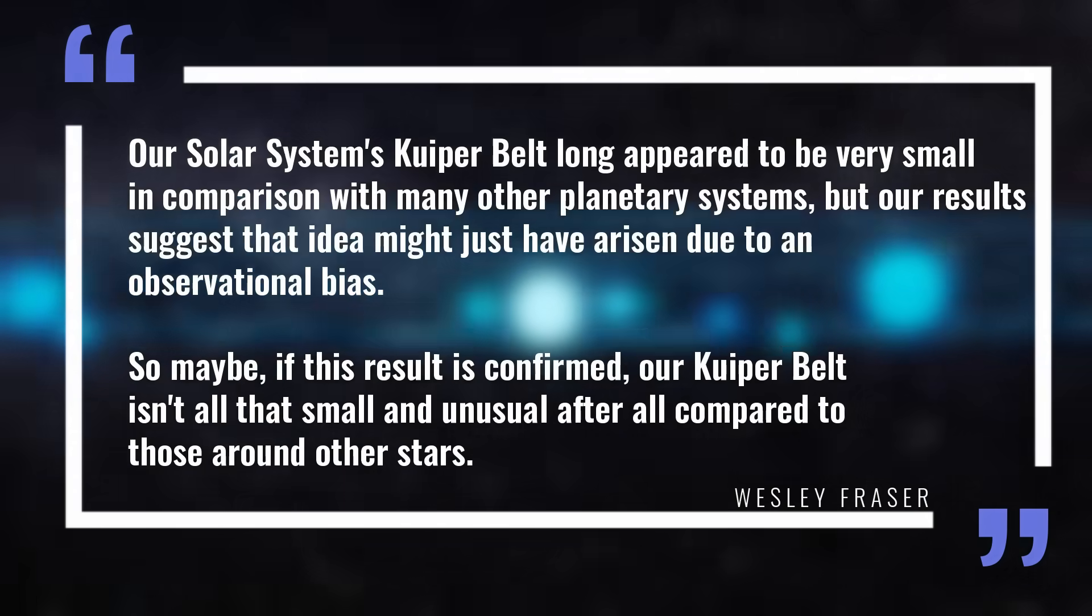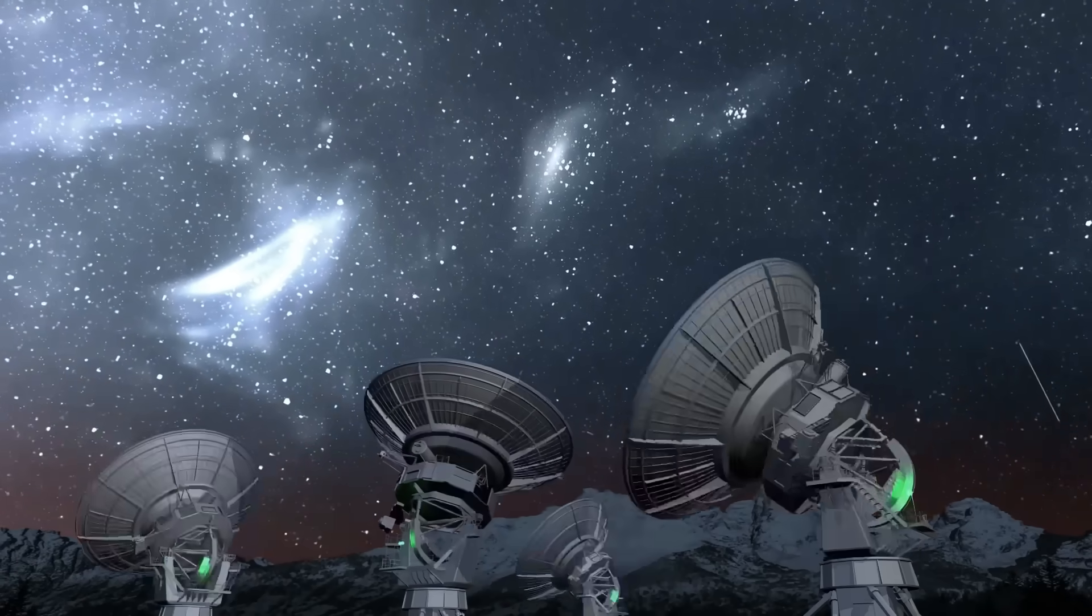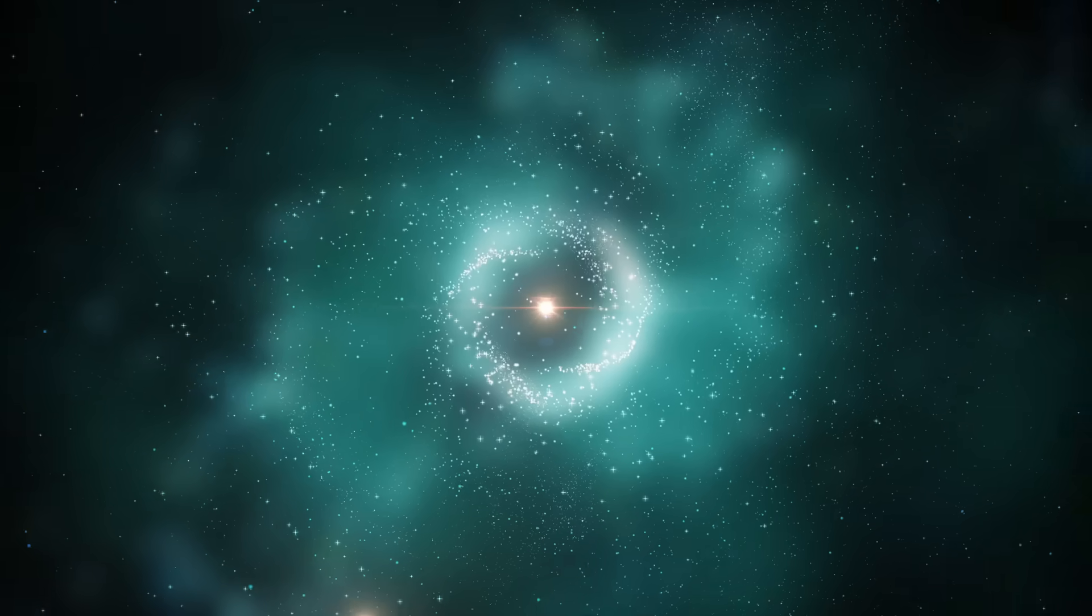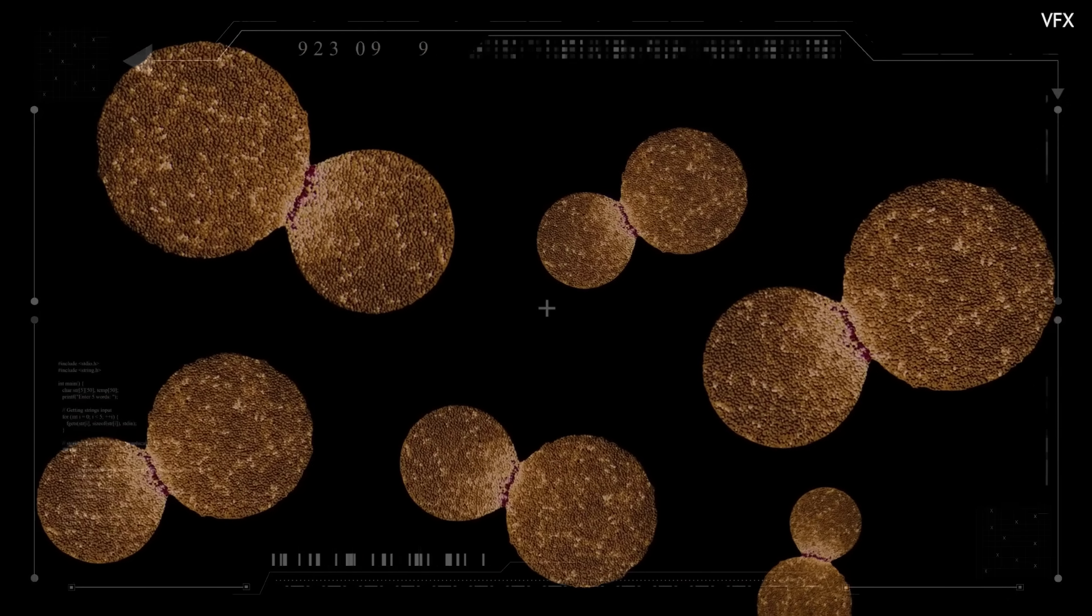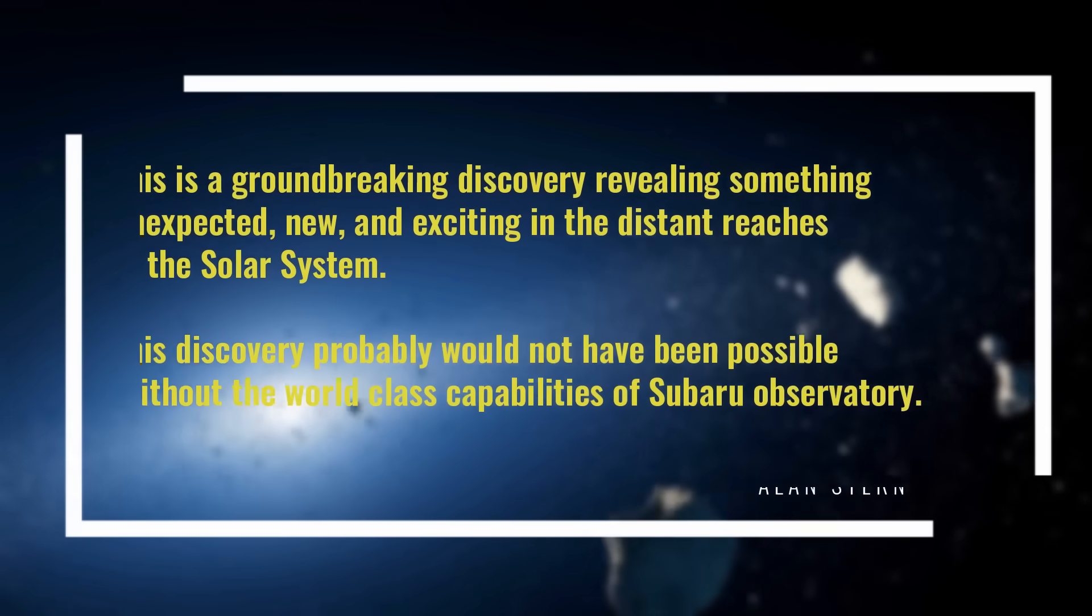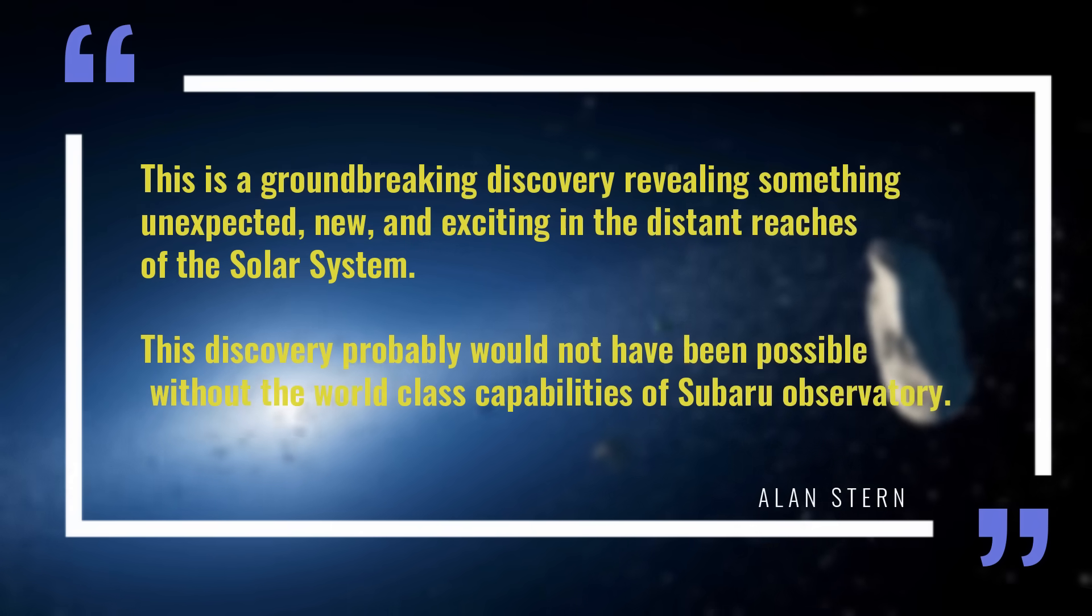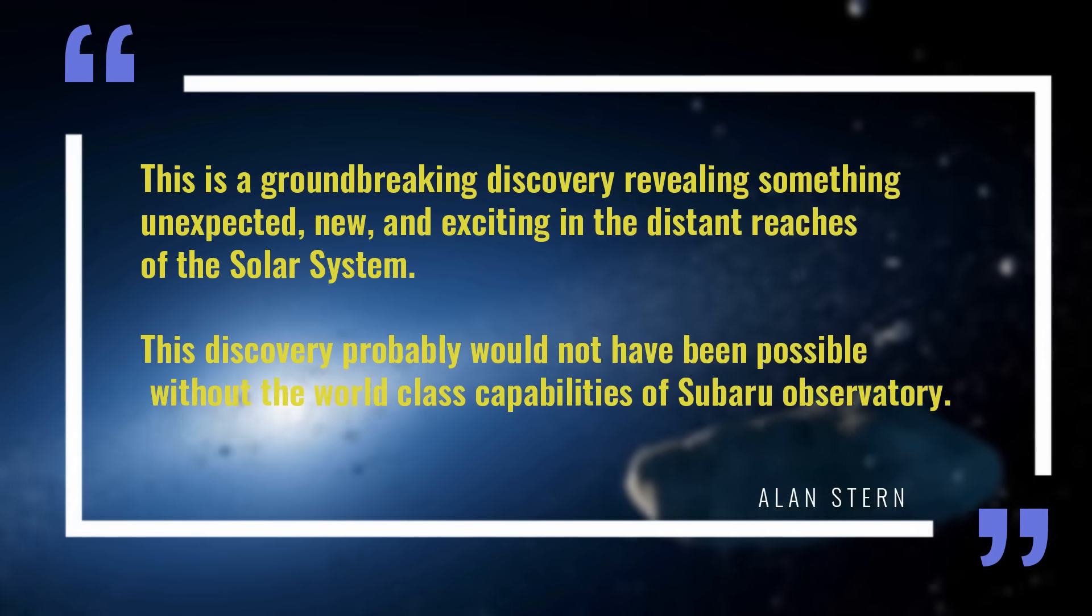So maybe, if this result is confirmed, our Kuiper belt isn't all that small and unusual after all, compared to those around other stars. Yes, our space observation technology has its limitations, which can lead to biases that make certain features seem unusual when they might not be. If the new Kuiper belt findings are confirmed, we can rule out one of these supposed oddities, a smaller-than-expected solar nebula. To better understand this discovery, astronomers are continuing to track the orbits of these 11 distant objects. This is a groundbreaking discovery, revealing something unexpected, new, and exciting in the distant reaches of the solar system, said New Horizons principal investigator Alan Stern of the Southwest Research Institute. This discovery probably would not have been possible without the world-class capabilities of Subaru Observatory.